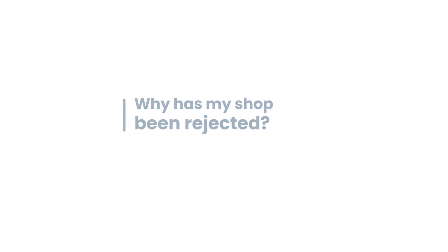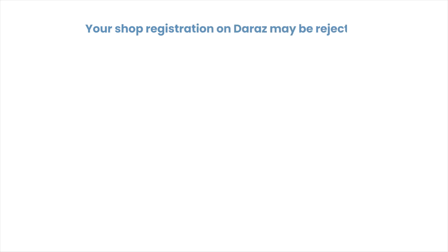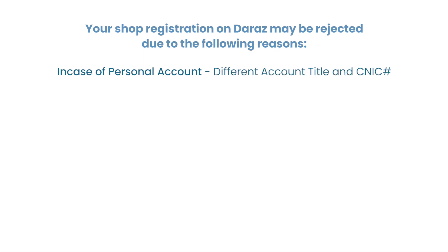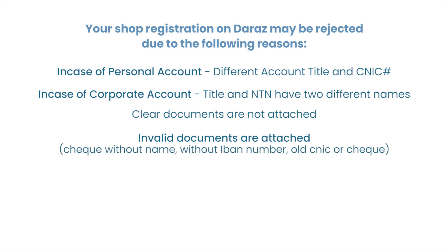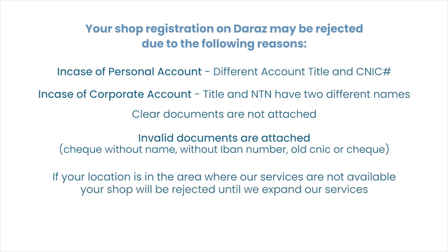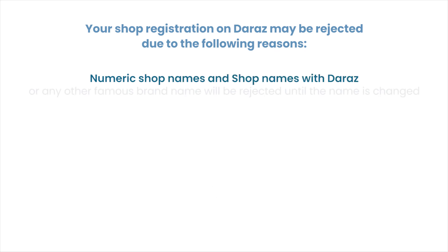Why has my shop been rejected? Your shop registration on Daraz may be rejected due to the following reasons: in the case of a personal account, a different account title and CNIC; in the case of a corporate account, the title and NTN have two different names. Clear documents are not attached, or invalid documents are attached — for example, a cheque without a name or a cheque without an IBAN number mentioned. Old CNIC or cheque. Numeric shop names and shop names containing 'Daraz' or any other famous brand name will be rejected until the name is changed.